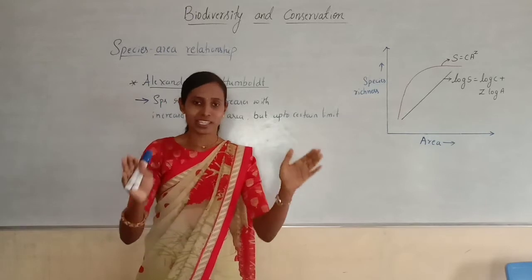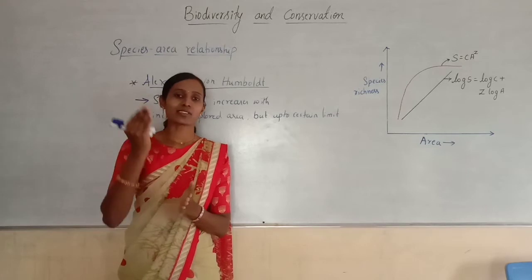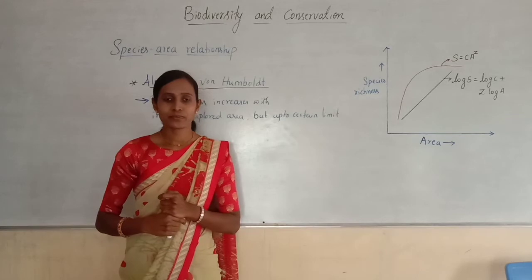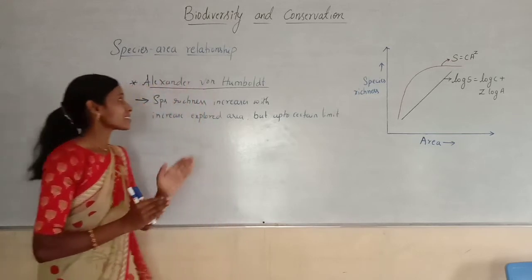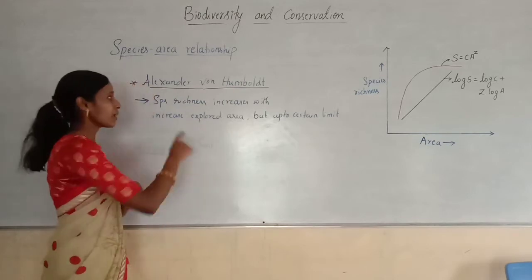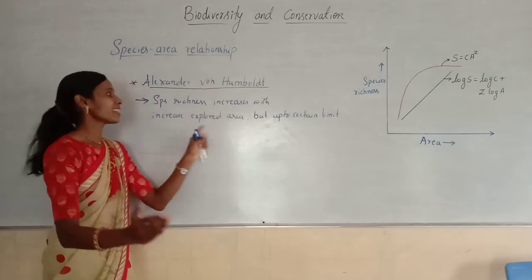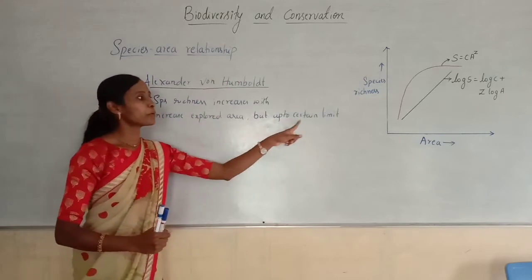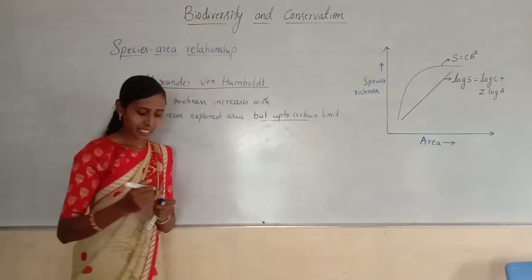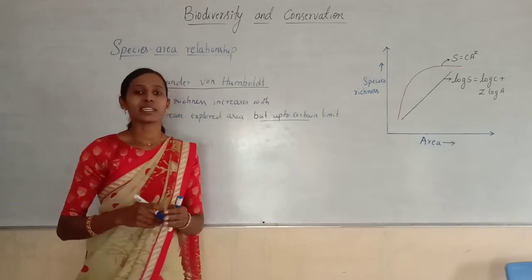He found that within a region, the species richness increases with the increasing explored area. Alexander von Humboldt found that within a region, species richness increases with the increase in explored area, but only up to a certain limit. This is very important — the species richness can be increased with the increase in area only up to a certain limit.